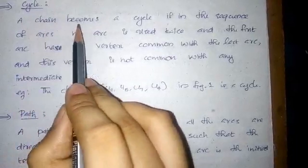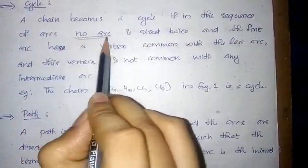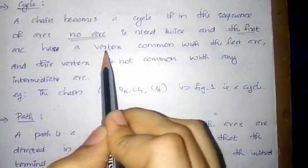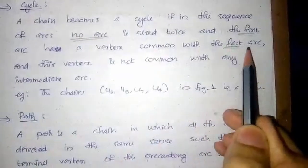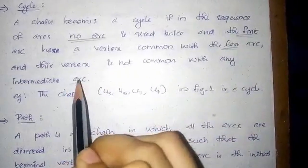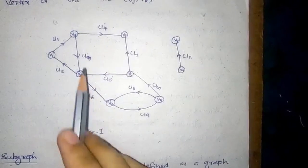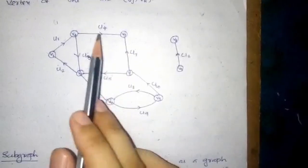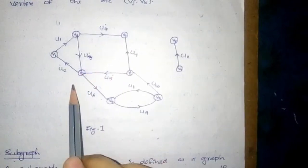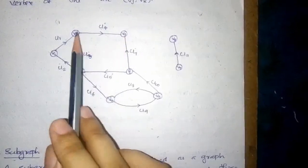A chain becomes a cycle if in the sequence of arcs no arc is used twice, the first arc has a vertex common with the last arc, and this vertex is not common with any intermediate arc. For example, the sequence U3, U5, U7, U4 is a cycle. It may also be denoted as V2, V3, V6, V9, V2.